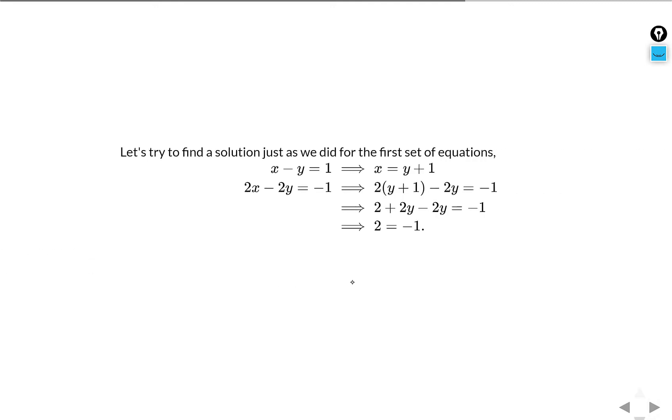Now, if we follow the same idea, we solve for x in terms of y and then we try to substitute it into the second equation. Then we reach a contradiction: 2 equals minus 1, which is impossible. This shows that there is no solution for this system of equations.